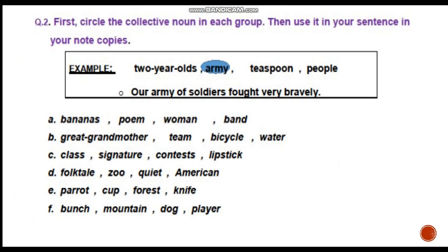Question number 2: first, circle the collective noun in each group, then use it in a sentence in your note copies. Six groups have been given and you need to circle the collective noun from each group, then use it in a sentence. For example, in a group with: two-year-olds, army, teaspoon, people — army is the collective noun. A sample sentence: an army of soldiers fought very bravely. Similarly, circle the collective nouns from the other groups and use them in your own sentences.